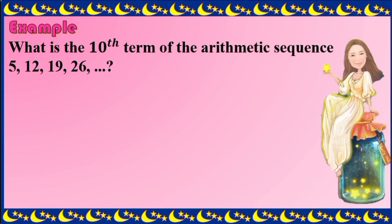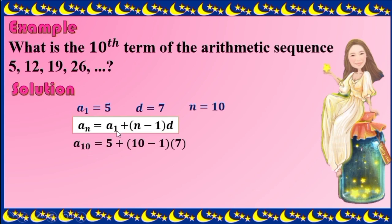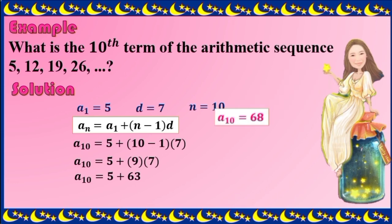Example: What is the 10th term of the arithmetic sequence 5, 12, 19, 26, and so on? To solve, the first term is 5. The difference is 7, obtained by taking the difference between any two consecutive terms: 12 minus 5 is 7, 19 minus 12 is 7, 26 minus 19 is 7, therefore the difference is 7. We are looking for the 10th term, so N equals 10. Substituting: A sub 10 equals 5 plus 10 minus 1 times 7. Then 10 minus 1 is 9, times 7 is 63, plus 5 — A sub 10 equals 68. So the 10th term of the given sequence is 68.